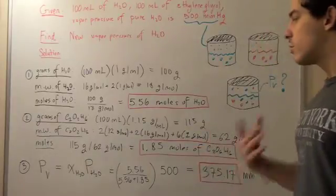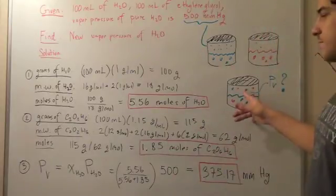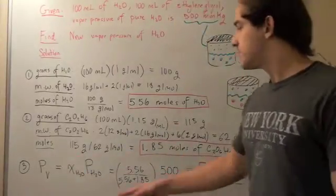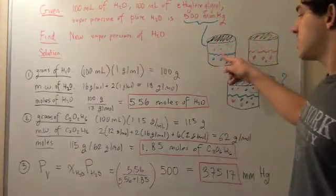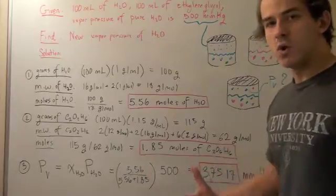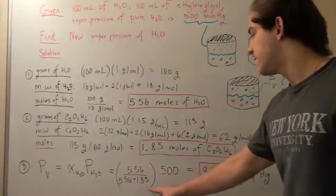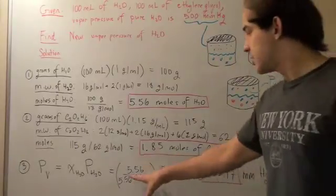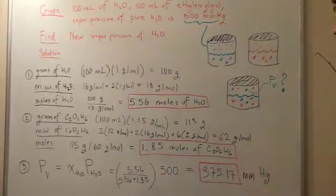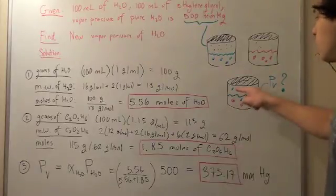Finally, we use our formula. To find the vapor pressure of the water molecules in this system, we multiply the mole fraction of water by the vapor pressure of pure water. That is 5.56 divided by the total number of moles — 5.56 plus 1.85 — giving us the mole fraction. That fraction is multiplied by 500, and that gives us 375.17 mmHg, which is the vapor pressure of the water molecules in the mixture.